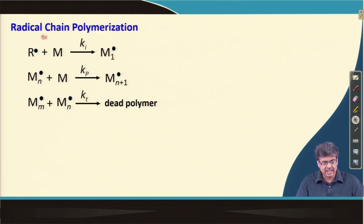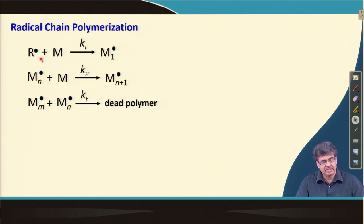Let us go back and discuss what was the kinetics or three steps of radical chain polymerization. We have learned that chain polymerization consists of three steps: the first one is initiation, the second one is propagation, and the third one is termination.